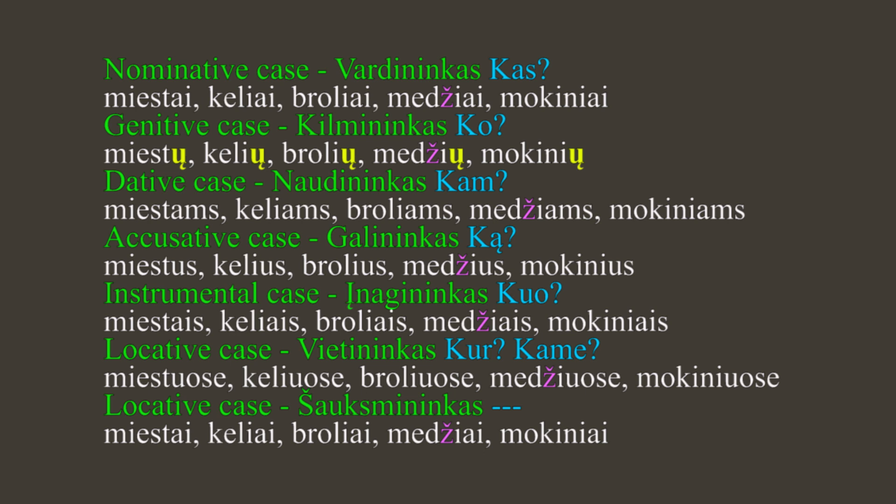As you noticed, we have medžiai, medžiai — in plural we have a 'dž' in each case. Įnagininkas — instrumental case (kuo, using what/with what): miestais, keliais, broliais, medžiais, mokiniais. Vietininkas — locative case (kur/kame, where): miestuose, keliuose, broliuose, medžiuose, mokiniuose.